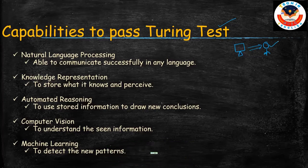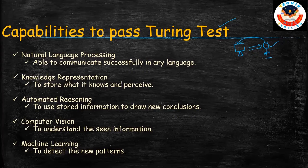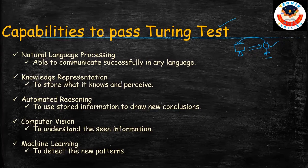If you have any properties of a human being, then you can talk and understand the language of whoever is communicating with you. So understanding language is one capability. We can also perceive the environment, and if we have any properties of a human being, we can store information in our brain — like memory.